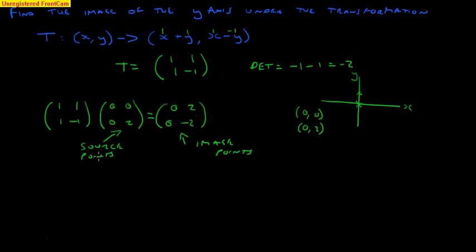The source points came from our source line, and the image points are the points on our image line. So we end up with points (0, 0), and the point (2, negative 2). There's our two points.